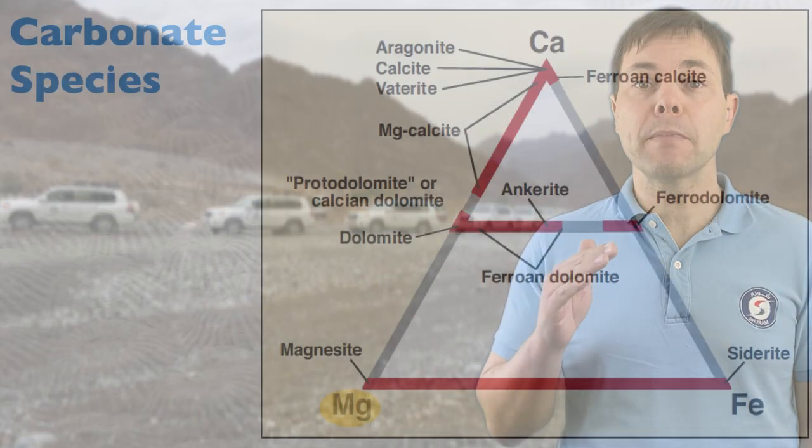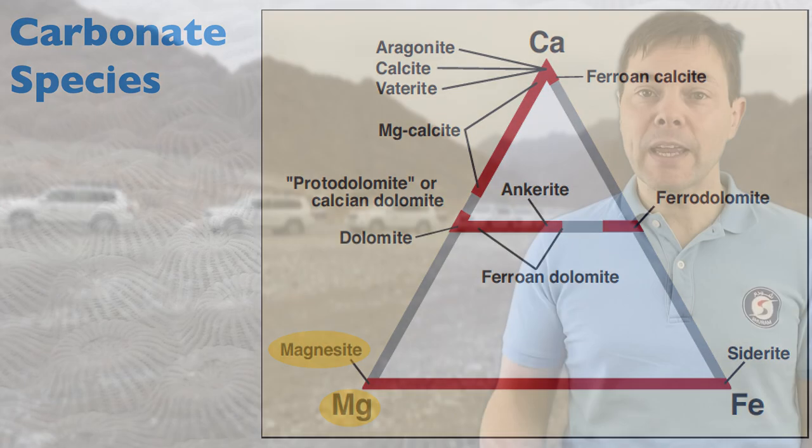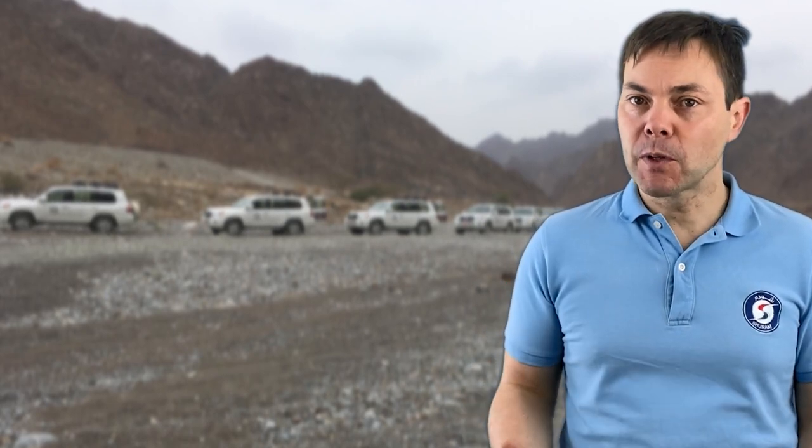What happens when you have a purely magnesium carbonate? It's known as magnesite, and that's what we have in the cliffs behind us — a high magnesium-rich carbonate. Magnesite is always diagenetic; you don't typically find magnesite as a precipitate in the ocean. So it is interesting from a diagenetic point of view, but it's not a very common mineral in the ocean.